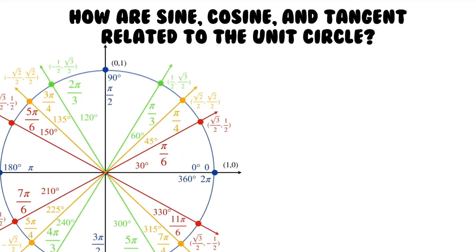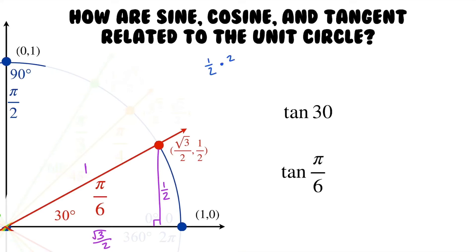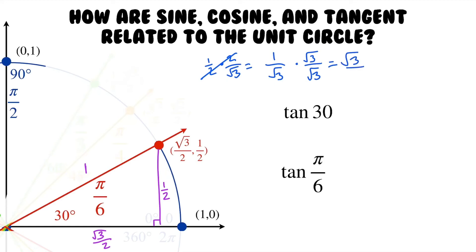Now let's take one last look at our 30 degree angle and find the tangent of this angle, or pi over 6. We know tangent is TOA — opposite over adjacent — so we do one half divided by root 3 over 2, which is the same as one half times 2 over root 3. We just flip the fraction so we can multiply, and then we can cross out the twos to get 1 over root 3. Now we rationalize the denominator by multiplying top and bottom by root 3, and we get root 3 over 3. So the tangent of 30 degrees, or pi over 6 radians, is root 3 over 3.